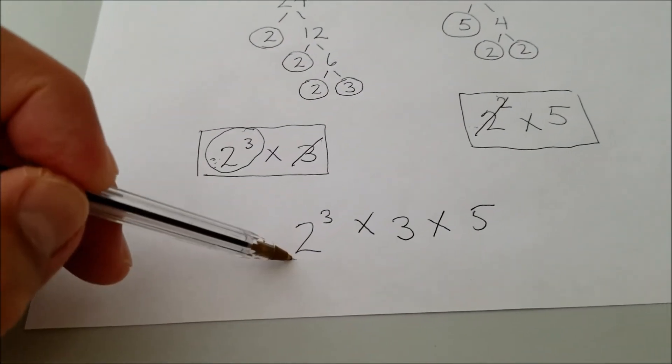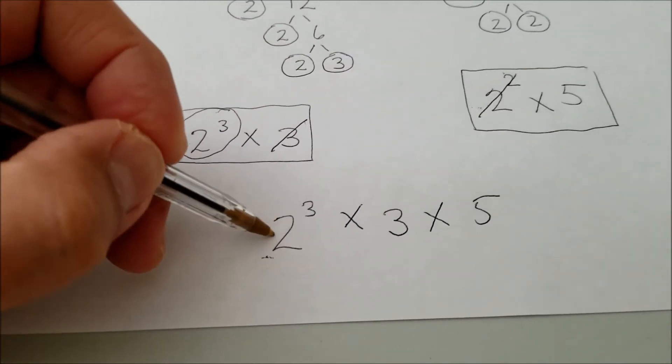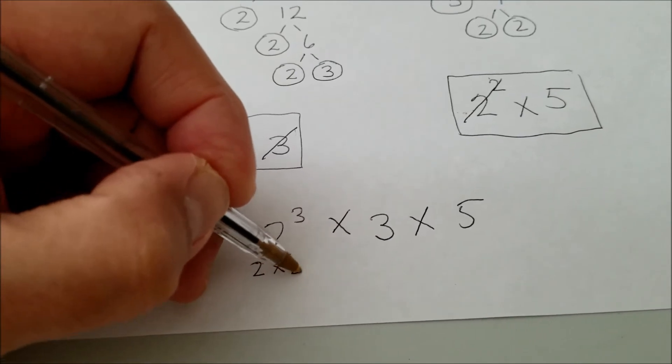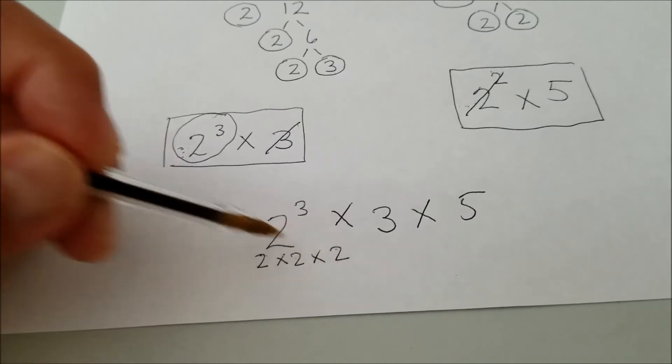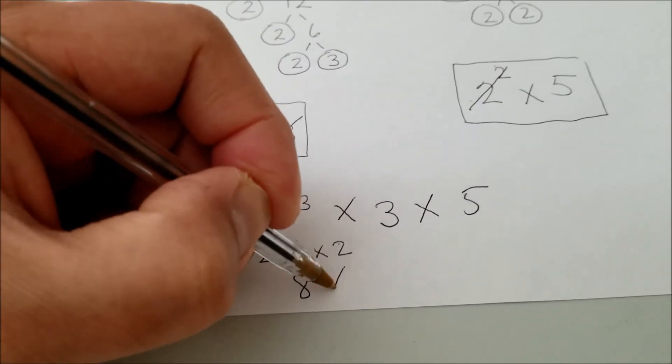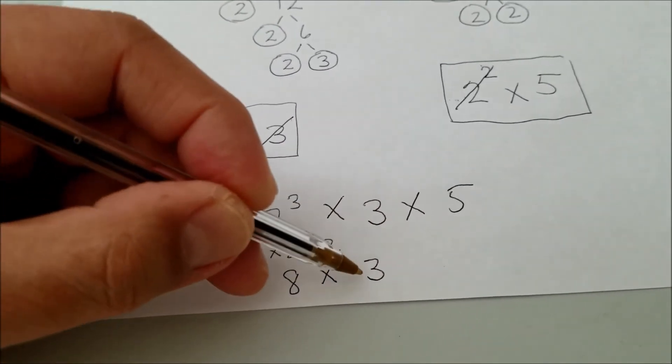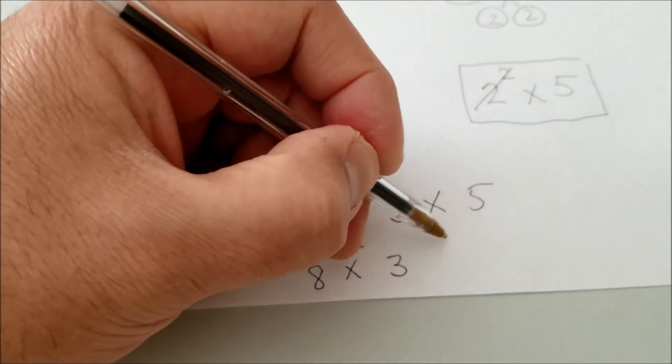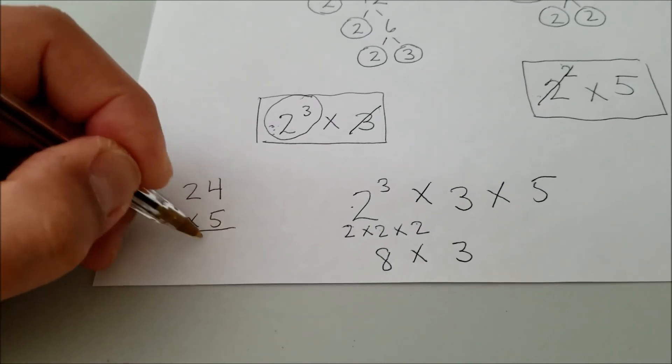It's going to be whatever the answer to this is. So let's go ahead and solve it. 2, and I'll write this out if you guys are having a hard time with exponents. So 2 to the third power is basically 2 times 2 times 2, which is 8. 8 times, and then we'll just drop this 3. 8 times 3 is 24. And then multiplying it by that last 5.